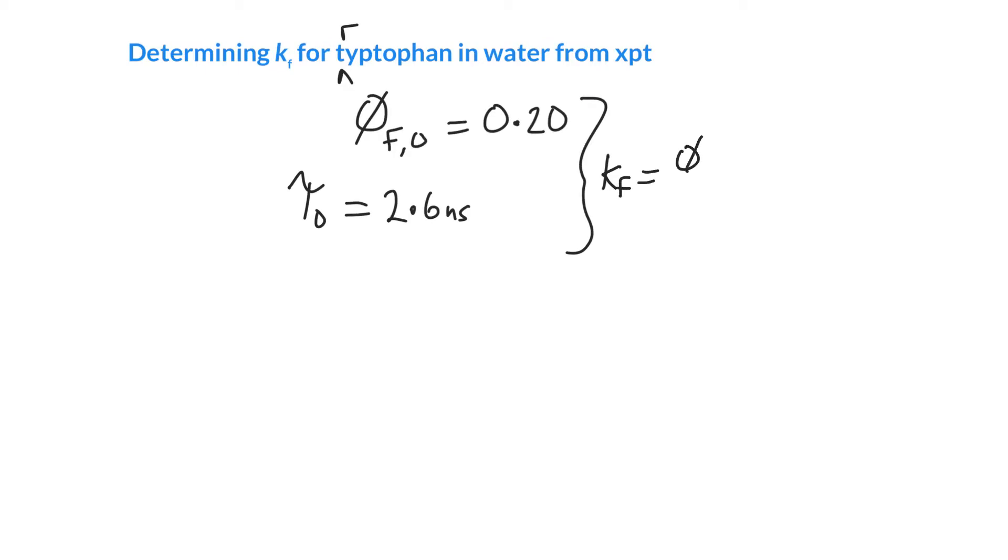So kF is the ratio of the quantum yield by the lifetime. And we've got those. The quantum yield is just a number. And the lifetime has units. So it's nanoseconds times 10 to the minus 9 of a second.